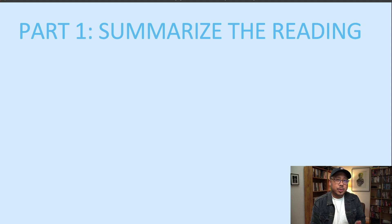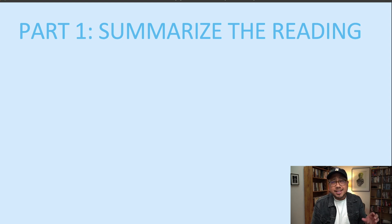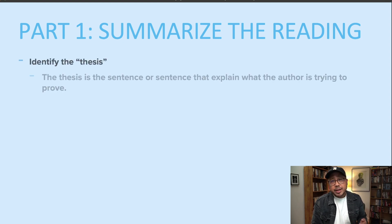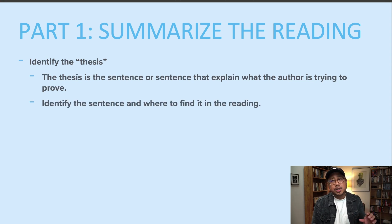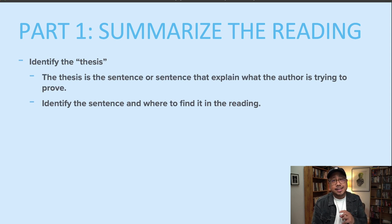The first thing you have to do when summarizing is to identify the thesis. The thesis statement is usually a sentence, two sentences, sometimes even three sentences. What these sentences do is express explicitly and clearly what the author is trying to prove. In your presentation, I want you to clearly show your classmates and me where you can find this thesis statement or these thesis statements.